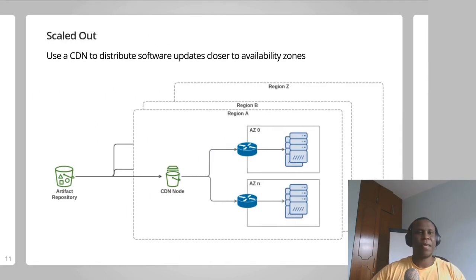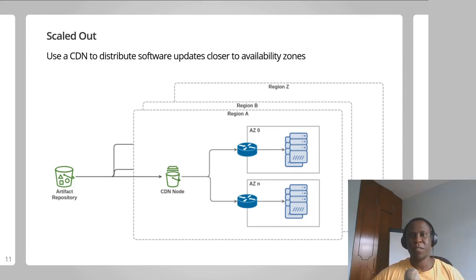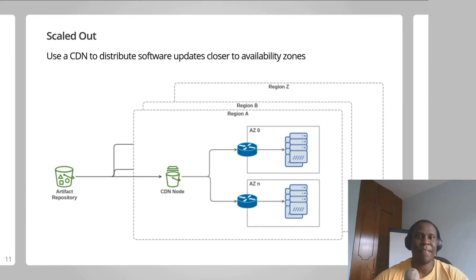You decide to scale up your software release architecture. The updated architecture includes a CDN node running in each of the regions your infrastructure is deployed in. When a software update is being rolled out, the servers now download the software update from the CDN node closest to them. The approach definitely works better. However, the downlinks in your availability zones still get congested whenever a large software update is being deployed, because you still have a large number of servers trying to download a software update at the same time from the same availability zone.